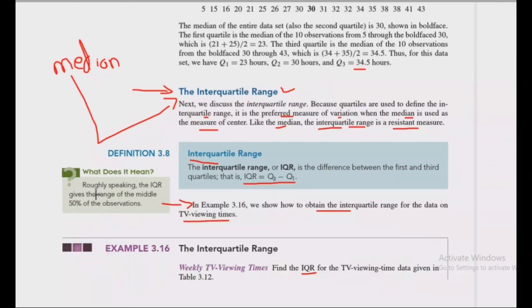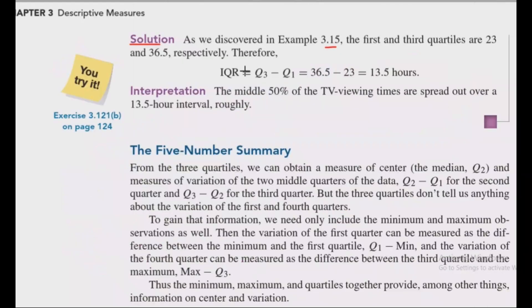The interquartile range: Q3 is 36.5, Q1 is 23. So 36.5 minus 23 equals 13.5.